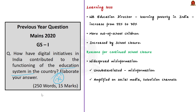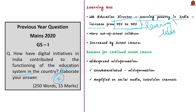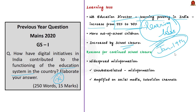According to the World Bank education director, learning poverty in India is expected to increase from 55% to 70% due to learning loss and more out-of-school children. This learning loss is increased by school closures. Now let's see the reasons for continued school closure. The first reason is widespread misinformation.